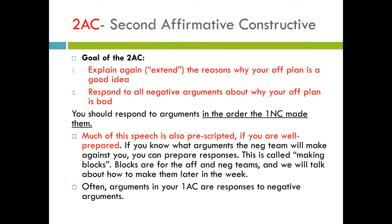The second speech is the 1NC, or first negative constructive. The purpose is where the negative responds to the 1AC AFT plan and gives reasons why it's a bad idea. There are a variety of types of arguments that can be run in the 1NC — we'll talk about those in later videos. The goal is to prove that the AFT plan causes more problems than it helps — that the AFT's harms outweigh its advantages. There are two ways to do that: on-case arguments, which directly respond to the AFT plan's advantages, and off-case arguments, which give other reasons why the affirmative plan is a bad idea. DAs, counterplans, Ks, and T are all examples of off-case arguments. This speech is mainly pre-scripted since you usually know the other team's AFT plan beforehand.